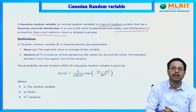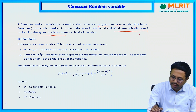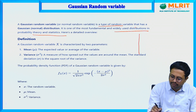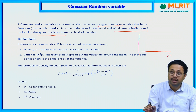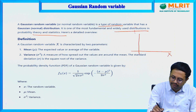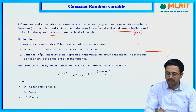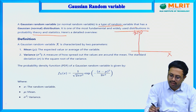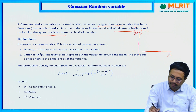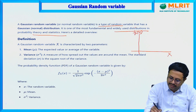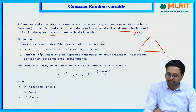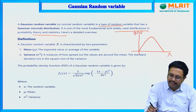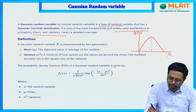How is the Gaussian random variable defined? In pictorial form, x is the random variable on the x-axis and f(x) on the y-axis represents the probability density function. The Gaussian representation is in the form of a bell-shaped curve, and it is symmetrical with respect to the mean.